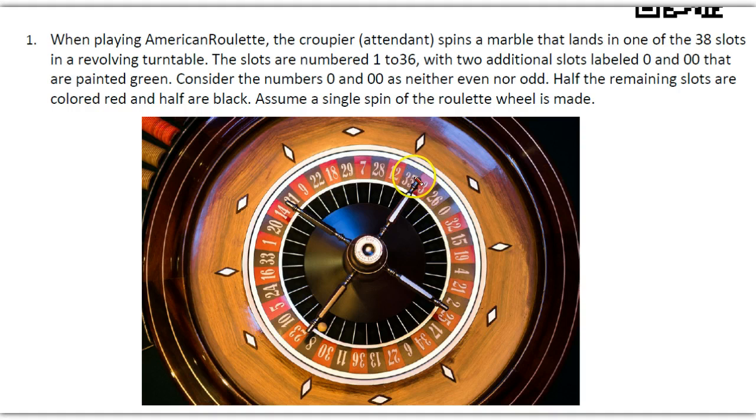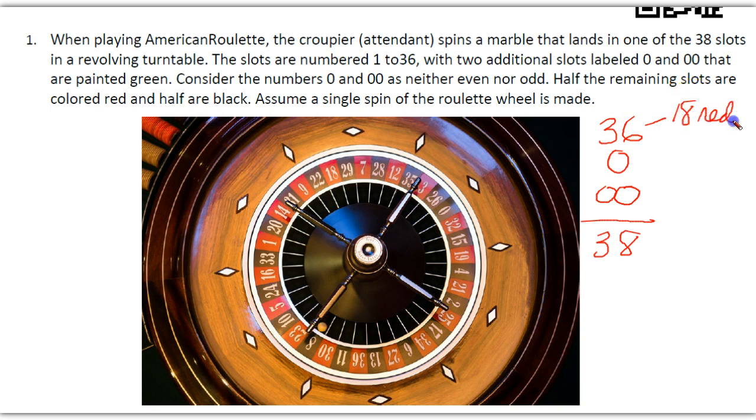Well, first of all, there are 36 numbers. So, 36 numbers. And then there are 2, where there's a 0 in one, and a double 0 in the other. So, a total, then, of 38 slots. Now, of these 36, 18 are red, and 18 are black.